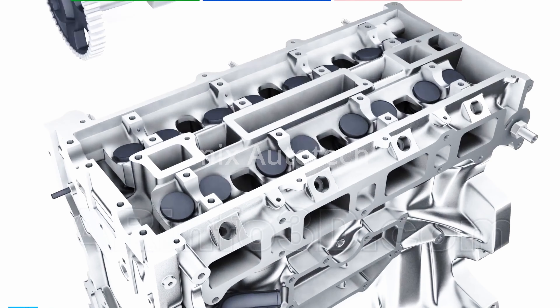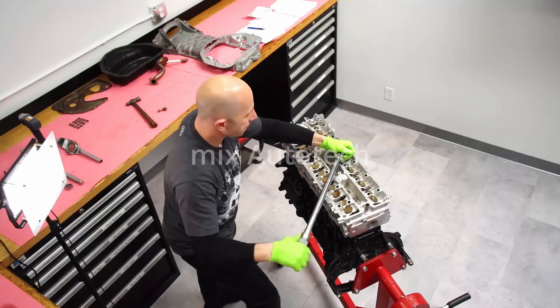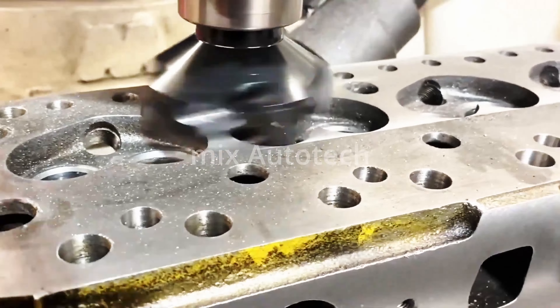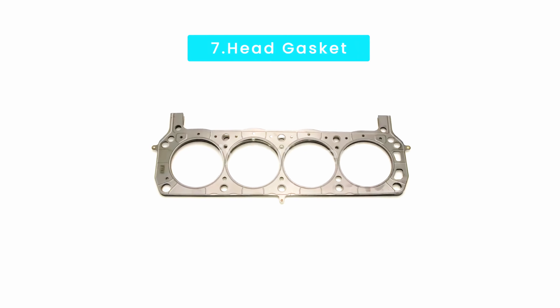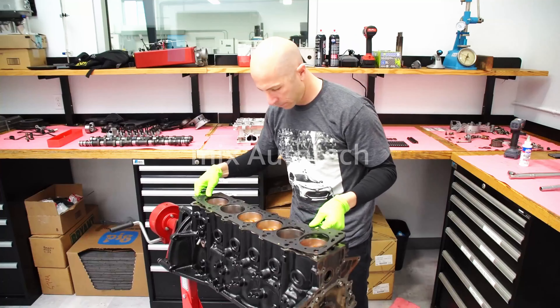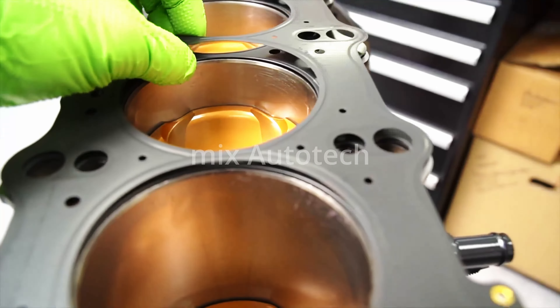The most common attachment method is a bolted joint, where bolts or studs secure the cylinder head to the engine block using precision torque. Before assembly, the surfaces of the cylinder head and engine block are machined to ensure flatness and proper sealing. A gasket — a specially designed material — is placed between the cylinder head and engine block to create a tight, leak-free seal.